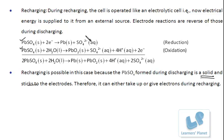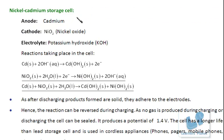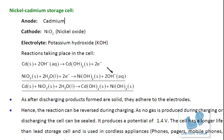This is how the car battery or secondary cell works. There is one more secondary storage cell — the nickel cadmium cell. In the nickel cadmium storage cell: the anode is cadmium, the cathode is nickel oxide, and the electrolyte is potassium hydroxide. The reactions which take place: cadmium combines with the hydroxyl ions present in potassium hydroxide (aqueous), forming cadmium hydroxide, which is a solid, and giving out electrons.